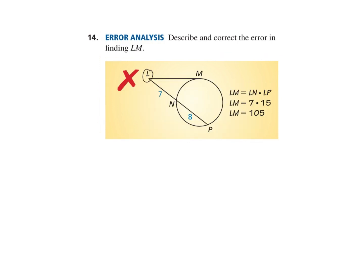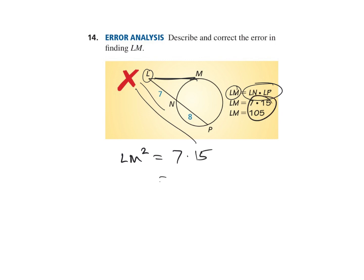Number 14: they took LM equal to LN times LP — part times whole is correct there. But LM should be part times the whole piece LM, so it should be LM squared equals 7 times 15, which is 105. They did that part right. But to solve LM squared, you take the square root: LM equals the square root of 105, which is approximately 10.2.